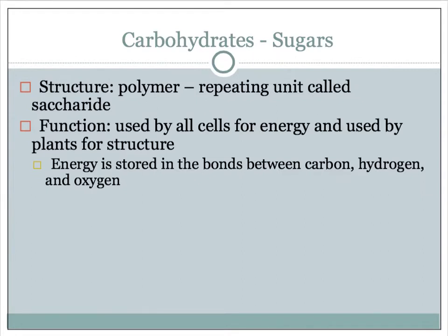The first one we're going to look at are carbohydrates, which are sugars. Their structures are polymers — remember, a polymer is a repeating unit. Carbohydrates are made of the polymer saccharide, which just means sugar. Their functions: they are used by all cells for energy, and they're used by plant cells for structure. The energy is stored in the bonds between the carbon, the hydrogen, and the oxygen — when those bonds break, energy is released.